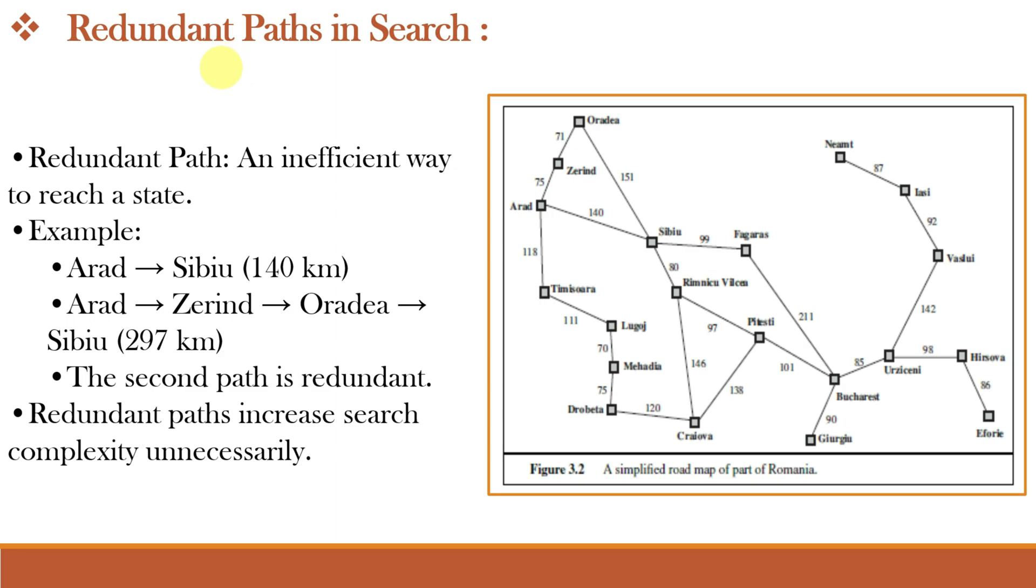One more matter of concern are the redundant paths. Redundant paths occur when there are multiple ways to reach the same state, and some paths are more efficient than the others. For example, we want to reach from Arad to CBU.